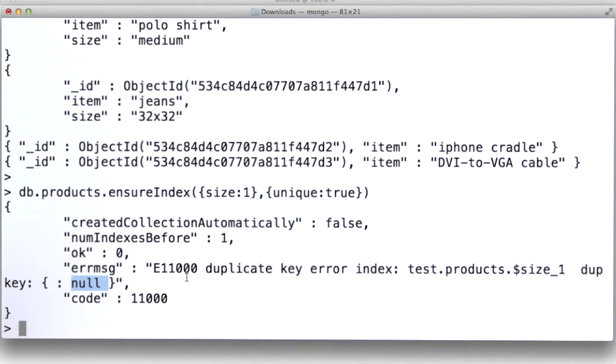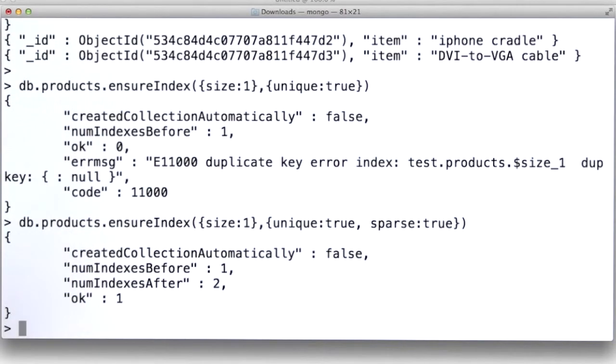What are my options? I could instead create this index with sparse equal to true. And now it's going to be fine. I'm able to create the index. There wasn't one index before, and now there are two. That pretty much works well.